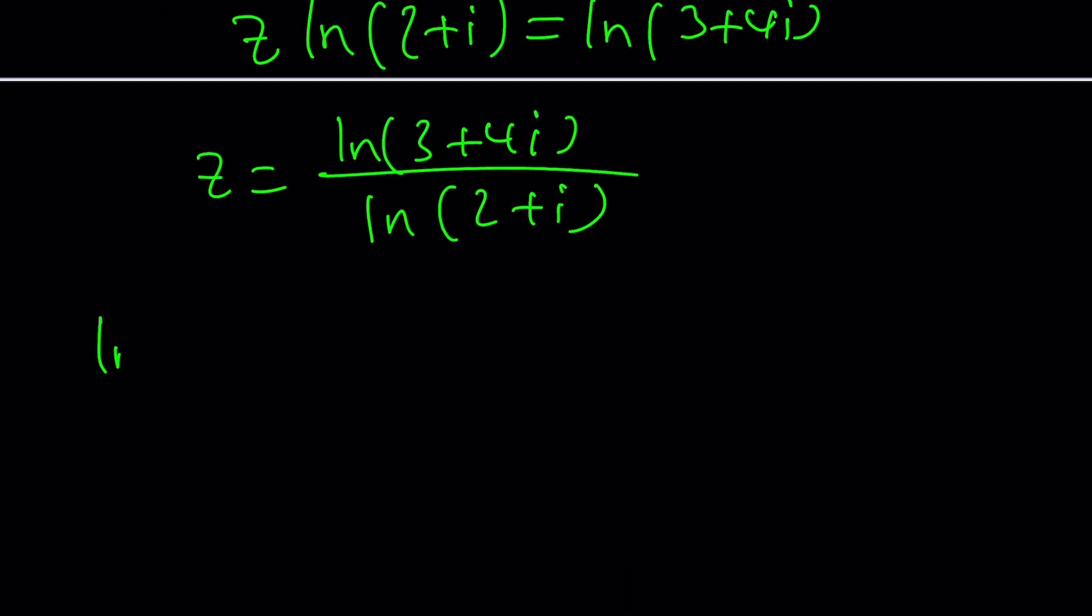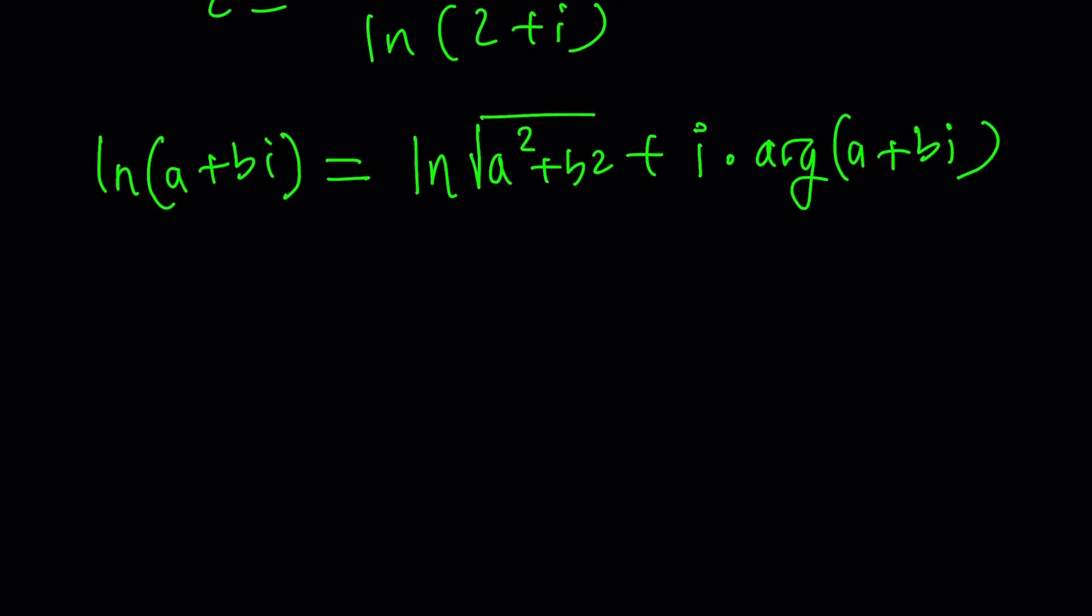That's a good question. Let me tell you. There's actually a formula. If you have ln of a plus bi in general, it can be written as ln of absolute value of a plus bi, which is the square root of a squared plus b squared plus i times the argument of a plus bi. What is the argument of a plus bi? We need to plot a complex number in the argand plane and then look at the angle that it makes.